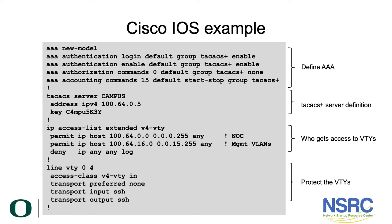We then apply this VTY access list and the AAA setup to the VTY ports. In this case the router has five VTY ports. We've applied the access list and defined the transports allowed — only SSH in and SSH out. By default, Cisco devices support a considerable range of transports to access the virtual terminal interfaces, so we restrict to SSH only.